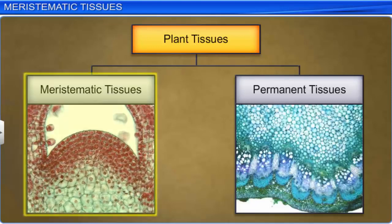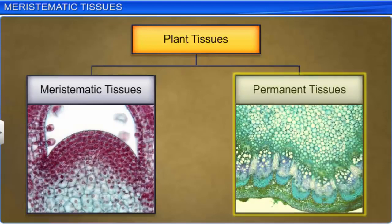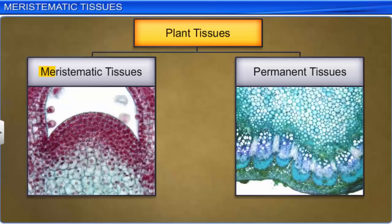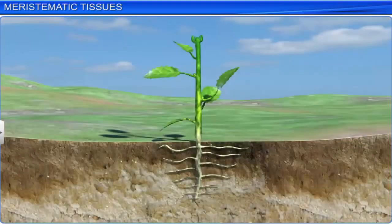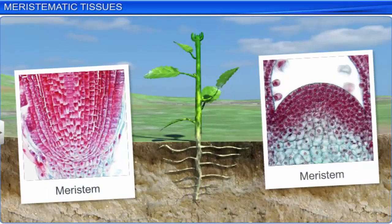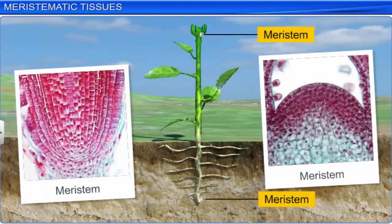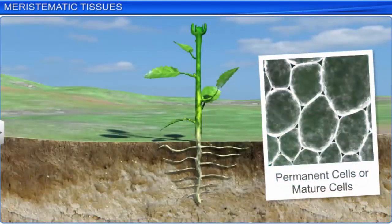Meristematic tissues undergo active cell division, while the permanent tissues do not undergo any division. The word meristem has been derived from the Greek word 'meris', which means division. The specialized region in plants where meristematic tissues are present is known as the meristem. Active cell division takes place in this region, leading to the growth of the plant. After meristematic division, the newly formed cells become structurally and functionally specialized and lose the ability to divide. These cells are also known as permanent cells or mature cells.